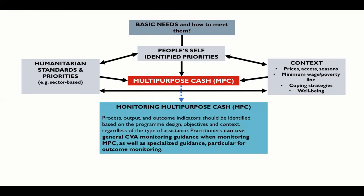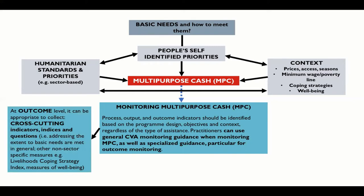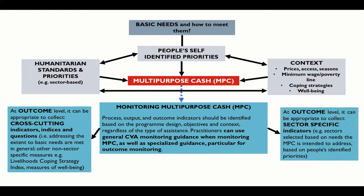Firstly, process, output, and outcome indicators should be identified based on the program design, objectives, and context, regardless of the type of assistance. Practitioners can use general CVA monitoring guidance when monitoring MPC, as well as specialized guidance for MPC outcome monitoring. Secondly, there are two main types of information to collect relating to outcomes: cross-cutting indicators, indices, and questions — for example, addressing the extent to which basic needs are being met in general or other non-sector-specific measures — and sector-specific indicators, such as sectors selected based on needs that MPC is intended to address.